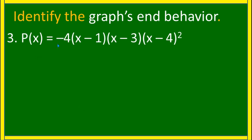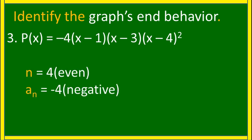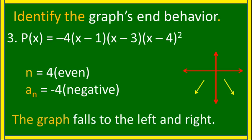Another example: p(x) = −4(x − 1)(x − 3)(x − 4)². What is the degree of the polynomial? That is 4, and that is even. The leading coefficient is negative 4, which is negative. So since n is even and a sub n is negative, the graph falls to the left and right.